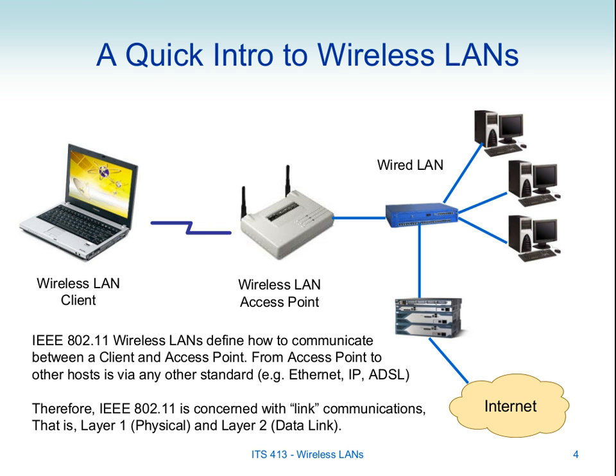This example shows a wireless link between client and access point, and the access point has a cable plugged into it which connects onto some other wired network. Typically Ethernet — a wired LAN — for example connecting into a switch, maybe some other switches or a router, then out to the internet. We're focusing on how to communicate between the client and the access point over the wireless link.